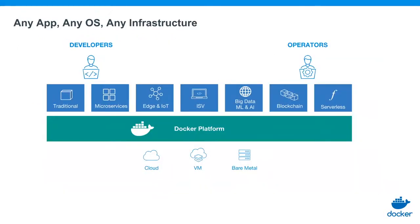The north star here at Docker — the vision we have — is to support any application running on any operating system on any infrastructure. We're providing abstraction, abstracting your application away from the infrastructure it runs on. Whether your application is a traditional application, a modern cloud-native microservice-based application, or something like a serverless or blockchain application, we want to use the Docker platform to abstract all the different application types, schedule and manage them the same way, giving you the flexibility to deploy wherever you want — cloud, on-premise VM, bare metal, or even edge and IoT.